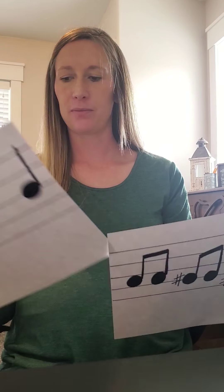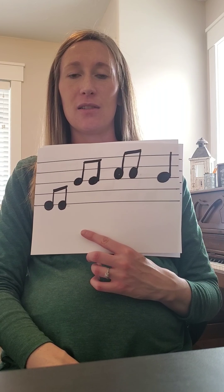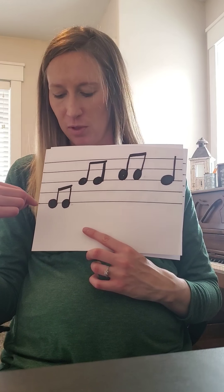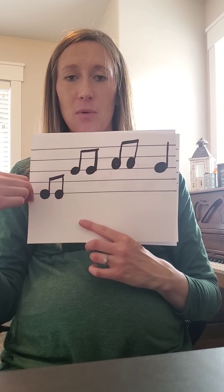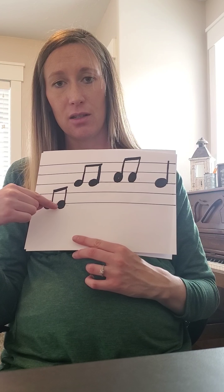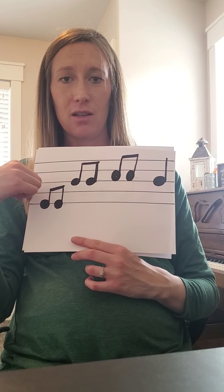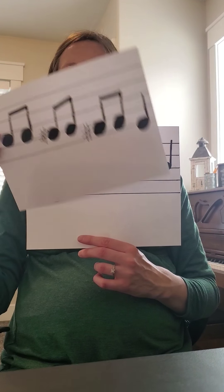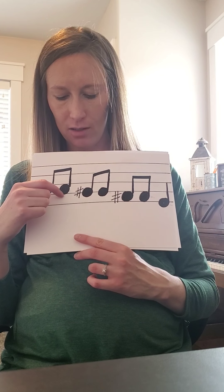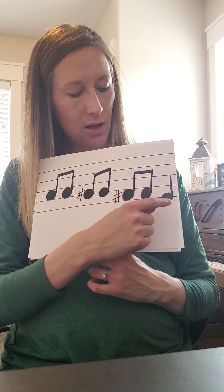We are actually going to write out a song ourselves. These are the notes for Twinkle Twinkle Little Star. With your pencil, write out five more lines and you're going to notate — which means write out — the notes. Copy what I have here. We start with two E's, then go up to two B's, then two C's, and a B. Then two A's, two G's, two F's, and end with an E.